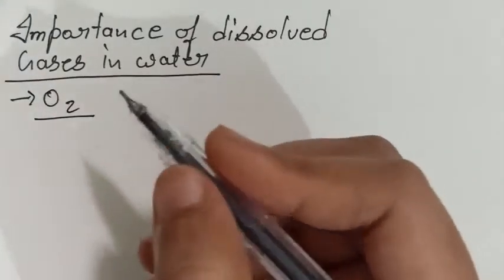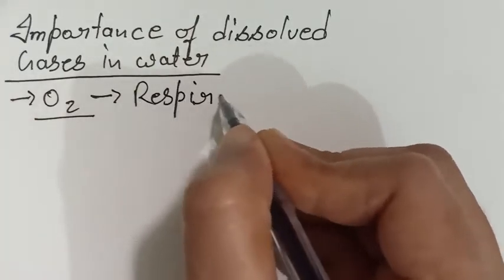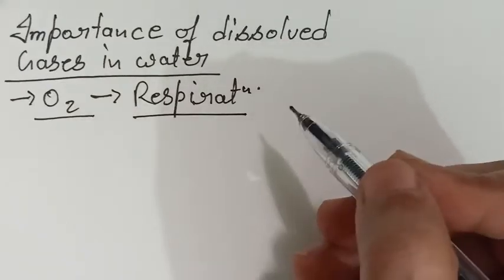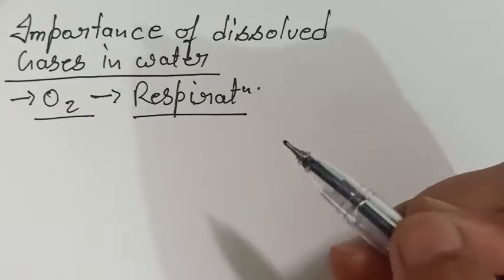So first purpose of oxygen is respiration. All the aquatic animals as well as plants, they require some sort of oxygen to oxidize their food for the formation of energy.